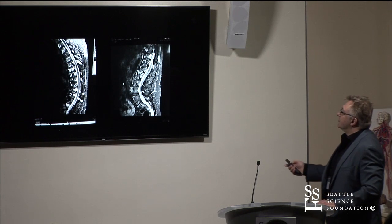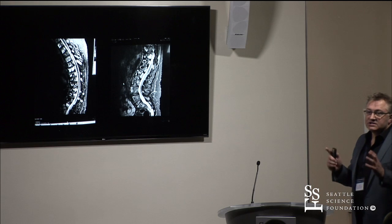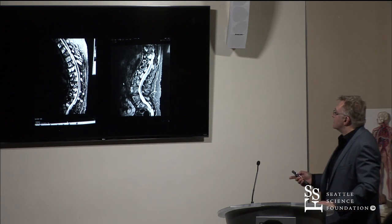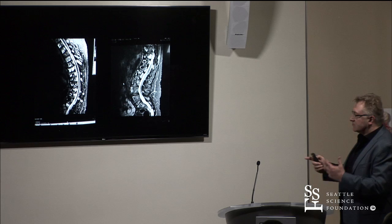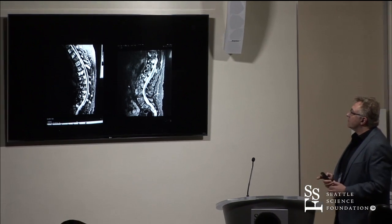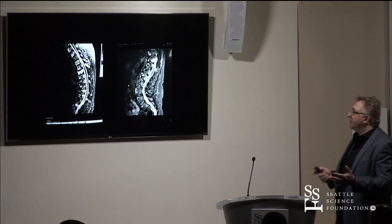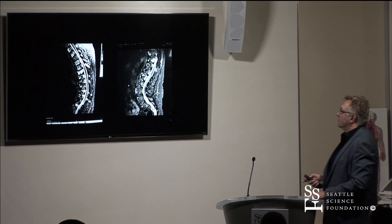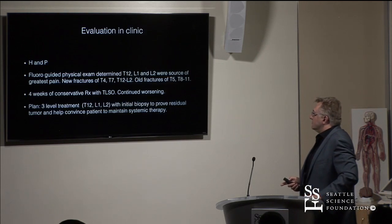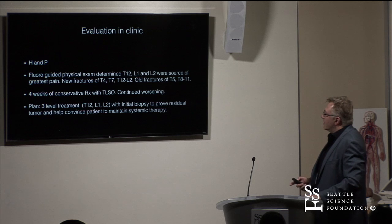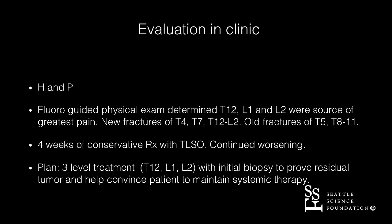How many can you treat? I've treated nine — but three in one setting at a time. I wanted this woman to tell me where she hurt the worst. I went in, treated three levels on fluoroscopic physical exam. I made her wait months because I didn't know if this was really working. I treated another three levels months later. She came back a year and a half later — I treated another three levels and her sacrum. She's now been three years without chemotherapy.